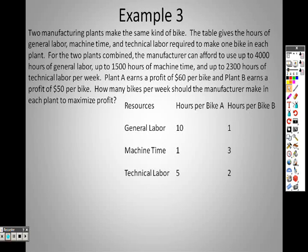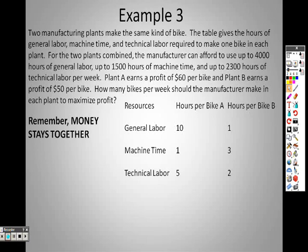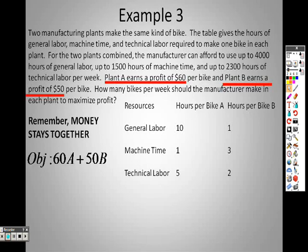So this is what we know. I'm giving you the table. Hours per bike. We'll call bike A, A, and bike B, B. So remember, money stays with money. Plant A earns $60 for profit, and plant B earns $50. So that's where I'm getting my objective function from. Plant A is $60, plant B is $50. There's my objective. Money stays with money. There is no other money.